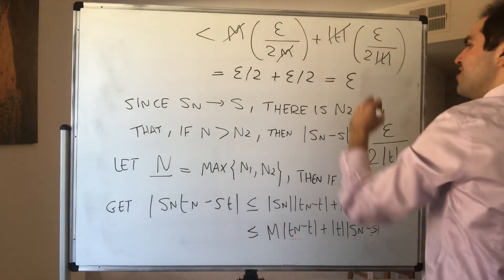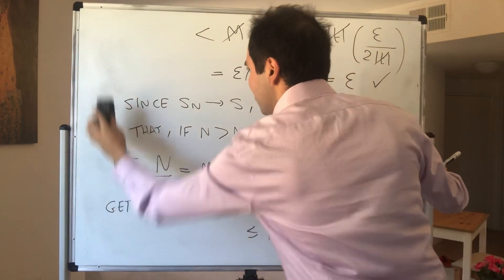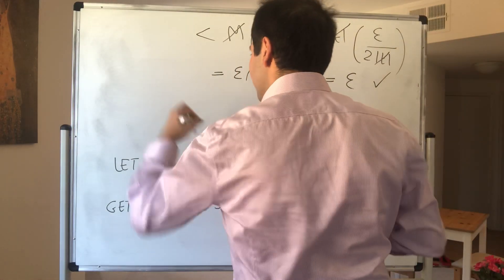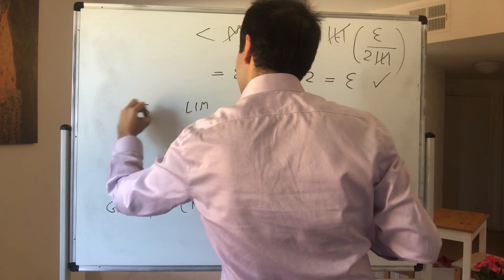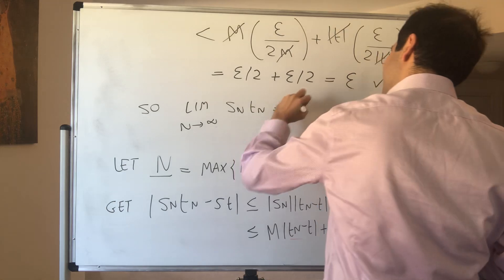And this gives us our victorious epsilon. And therefore, what have we shown? We've shown that Sn Tn goes to St. So limit N goes to infinity of Sn Tn equals St.